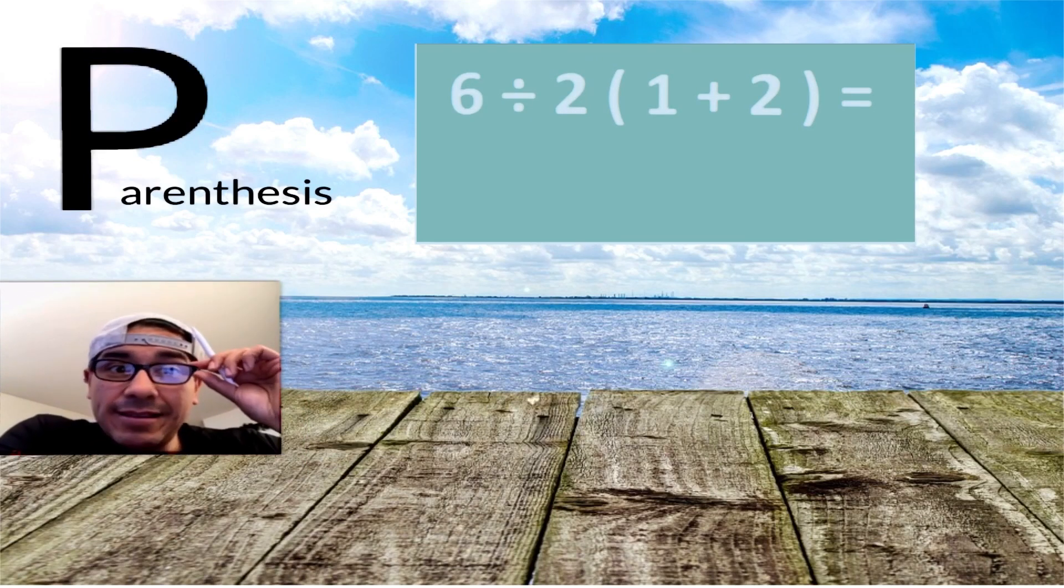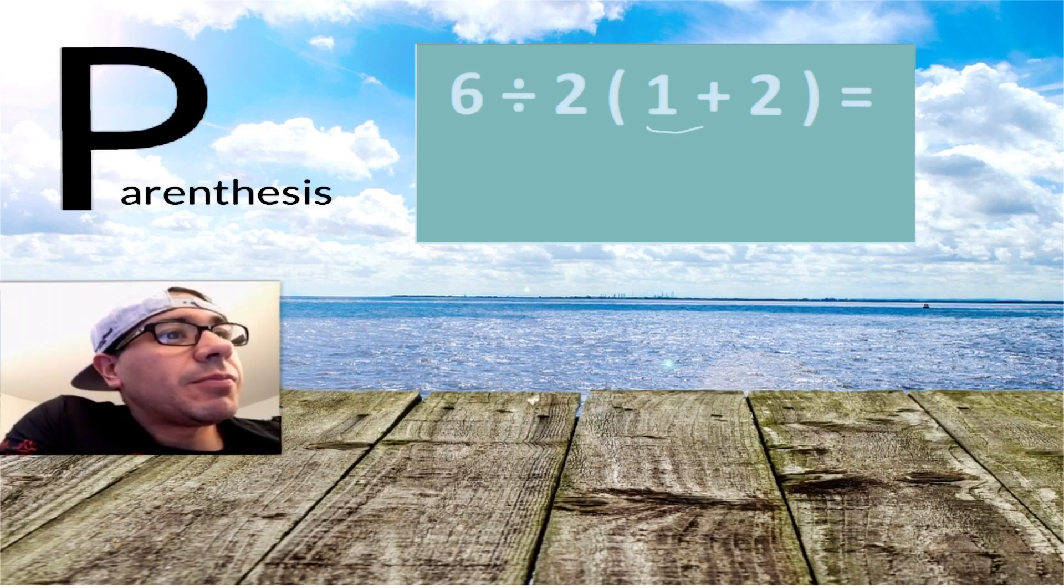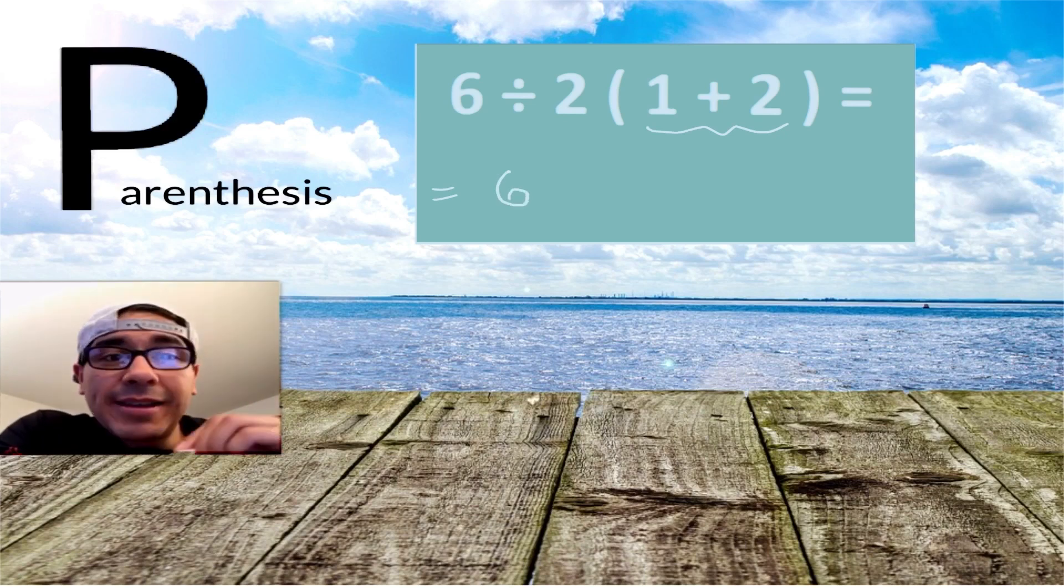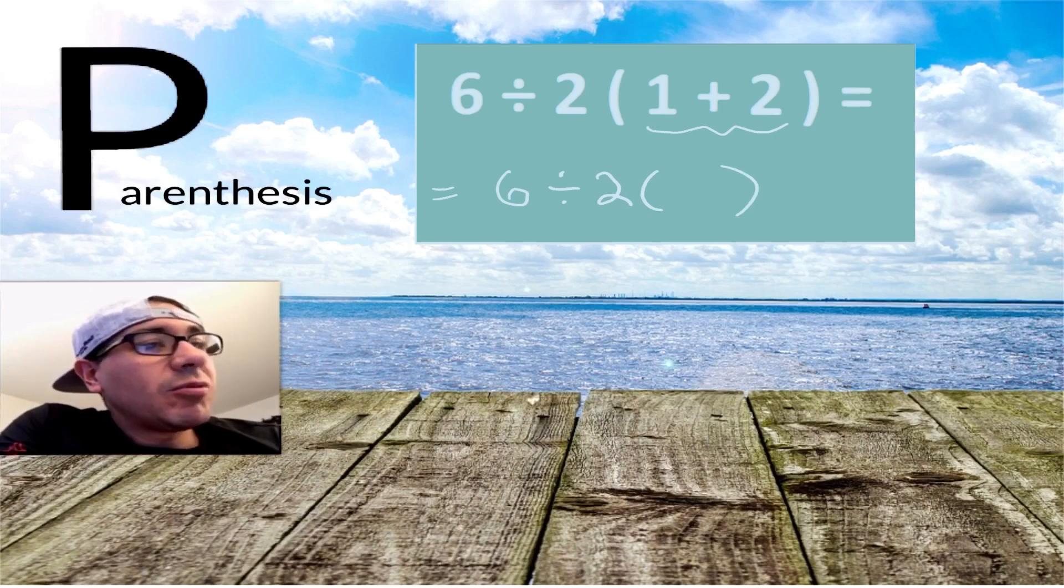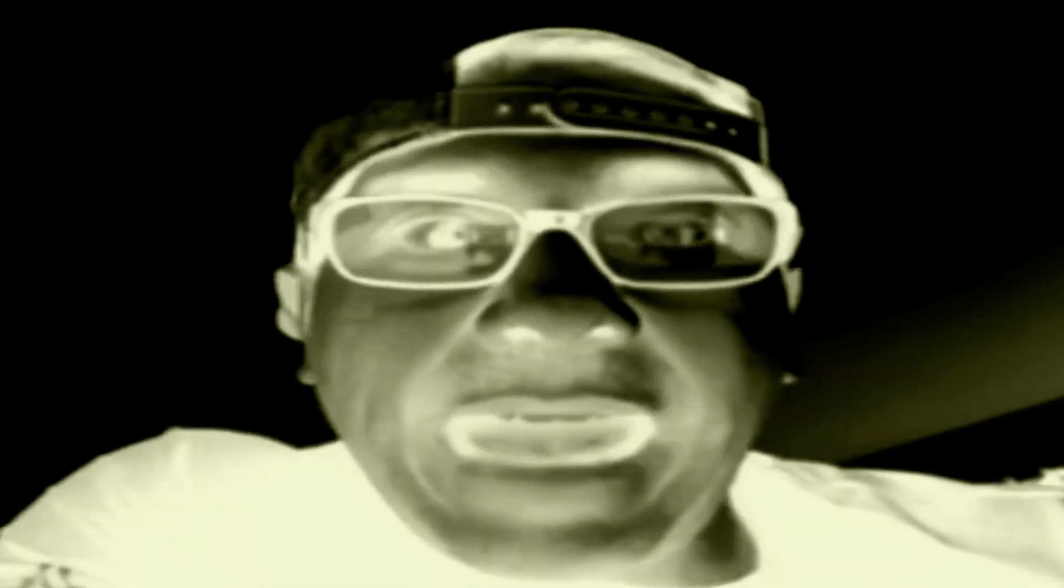Let's go ahead and do those parentheses. Notice nothing happened to that 6, so we just drop it. Nothing happened to that 2 yet, so we're going to drop that 2. And what we do is we go ahead and do what's in parentheses: 1 plus 2, and as you hear the person next to you they said 7, don't let them help you with math ever.